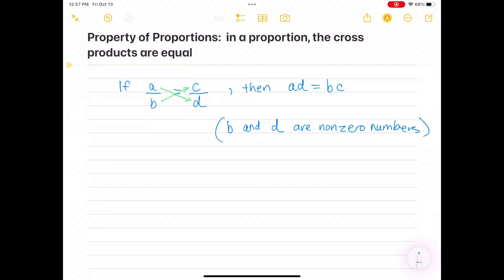For example, one-half equals two-fourths is a proportion because the cross-products 1 times 4 equals 2 times 2. Since 1 times 4 equals 4 and 2 times 2 equals 4, so 4 equals 4.